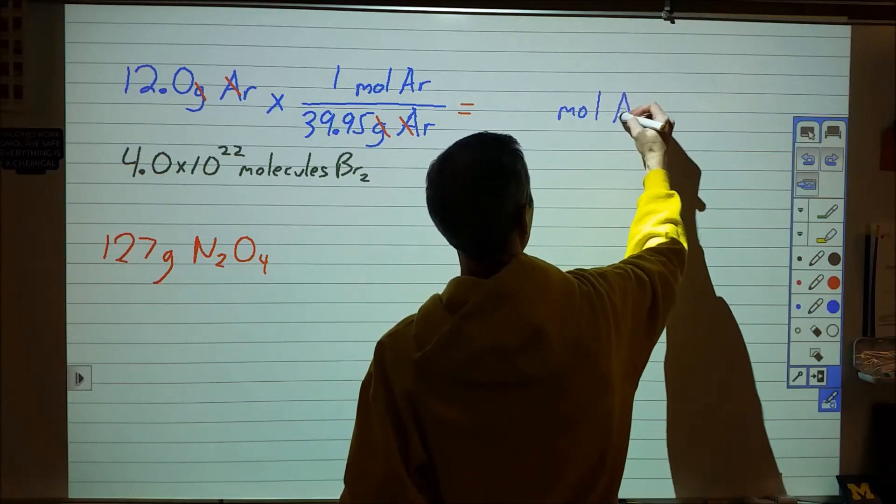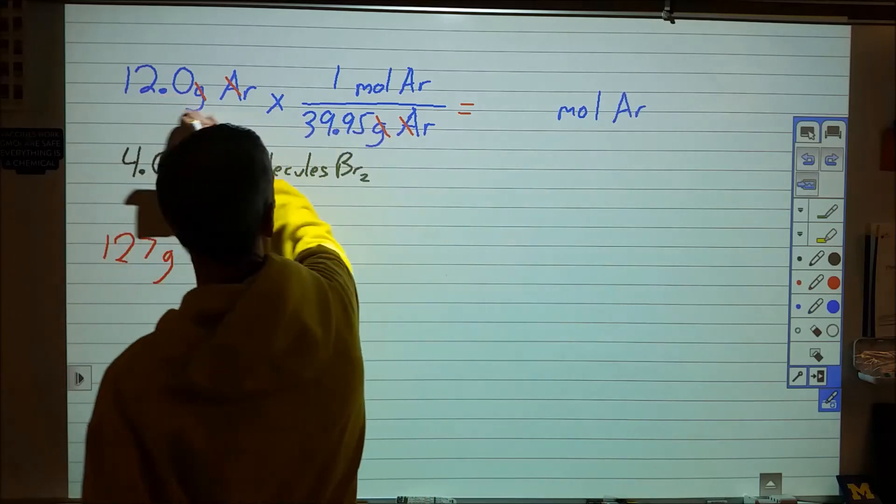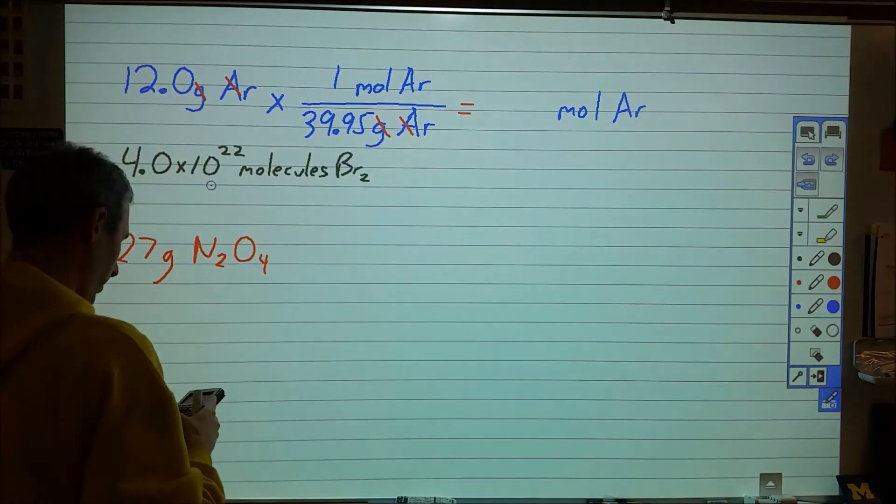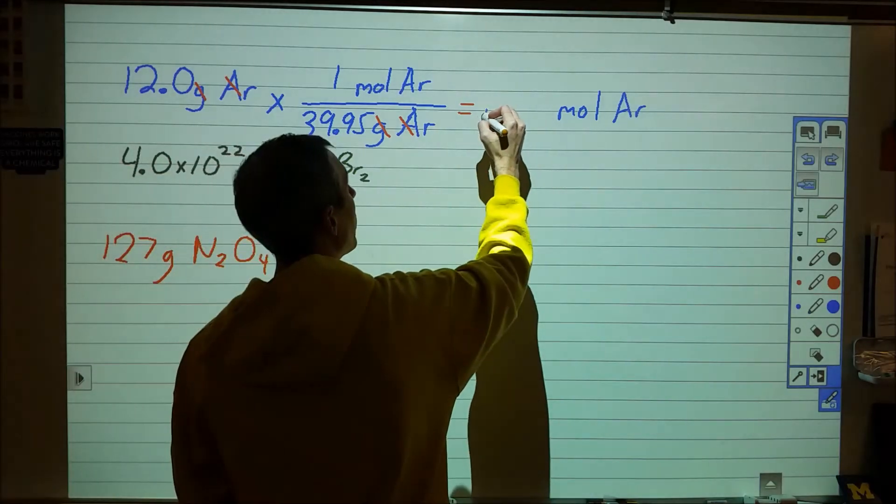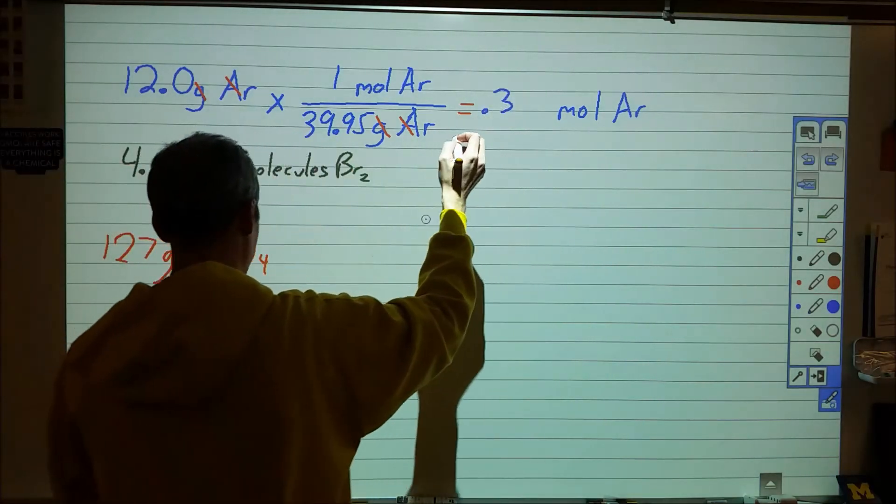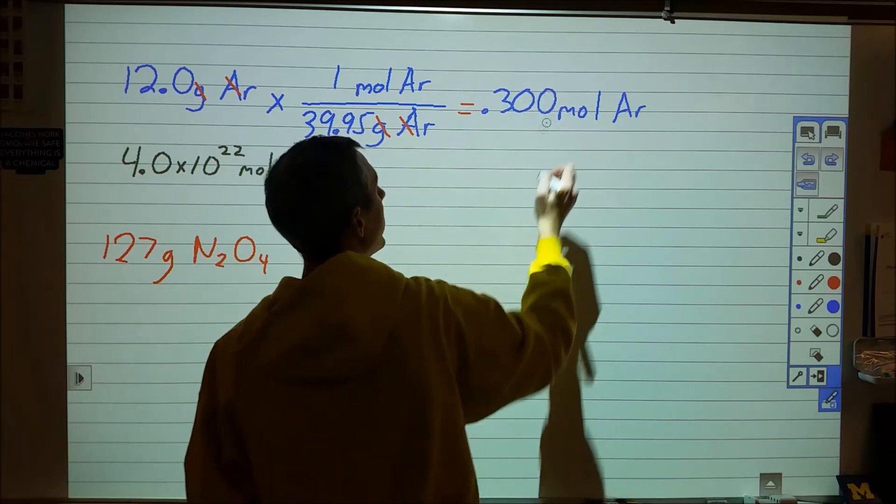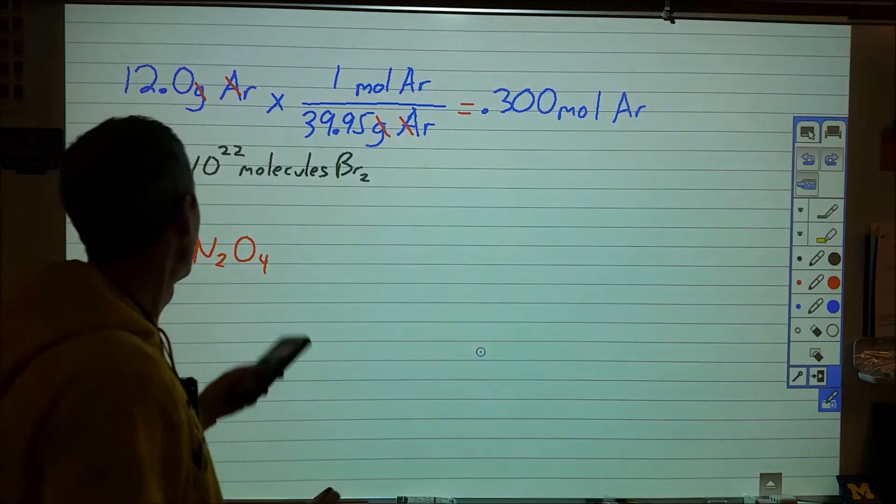And then to figure out my numerical amount I can take 12.0 times 1 divided by 39.95, which comes out to be 0.3, and then I need three sig figs, 0.300 moles of argon.